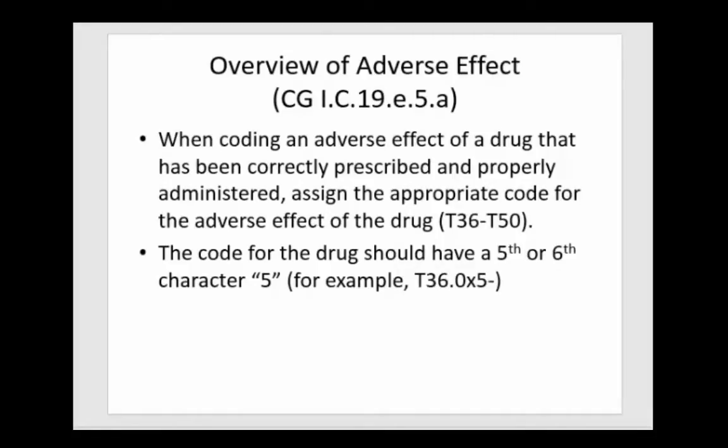When coding an adverse effect of a drug that has been correctly prescribed and properly administered, assign the appropriate code for the adverse effect of the drug, T36 through T50. The code for the drug should have a fifth or sixth character 5 to indicate it is an adverse effect.